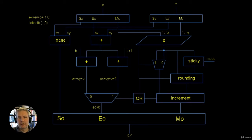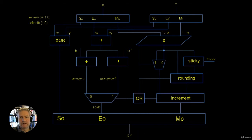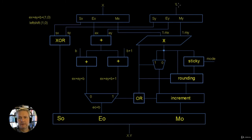We start at the top and we've got our input X and our input Y. The input X is the 32-bit single precision floating point binary number, and the same for Y. We've got our output at the bottom which is going to be X times Y. The first level has a couple of boxes used to split the signal for X and Y into the sign, the 8-bit exponent, and the 23-bit mantissa for both X and Y.